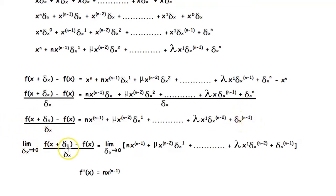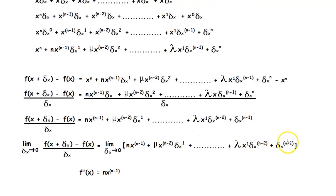Finally, we apply limits to both sides. The limit of f of x plus delta x minus f of x divided by delta x as delta x tends to 0, is equal to the limit of this whole expression as delta x tends to 0. Only the first term does not have a delta x, so when we use direct substitution, all the other terms tend to 0 and only the first term remains. So the derivative of f of x is equal to n into x to the power n minus 1. That is the proof of this theorem.